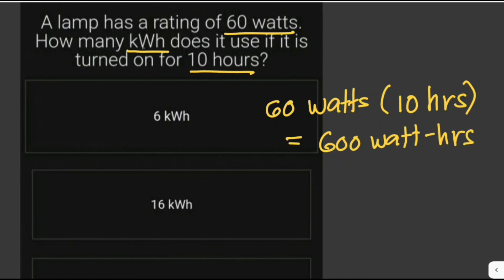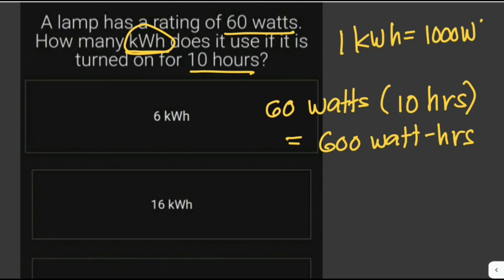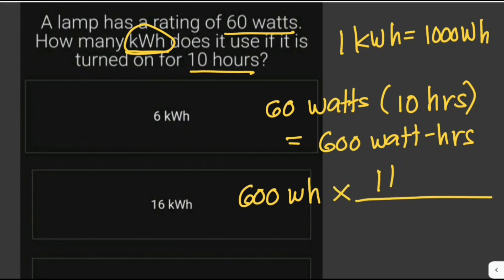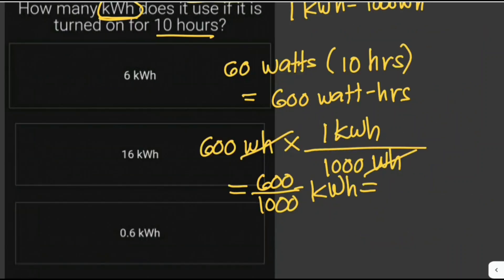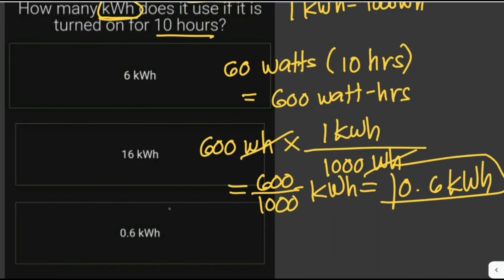We are asked for the number of kilowatt hours. One kilowatt hour is equal to 1000 watts for one hour. So we convert 600 watt hours to kilowatt hours — this gives us 600 over 1000 kilowatt hours, which is equivalent to 0.6 kilowatt hours. So this is our answer.